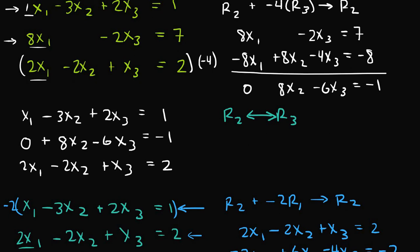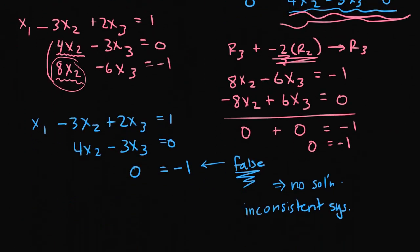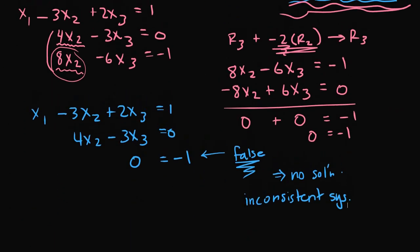And finally, if you graphed the original system, the three planes would not intersect at a common point. So that's another way to verify that this system has no solution. In fact, if you graphed any one of these equivalent systems, none of the three planes would intersect at one common point.